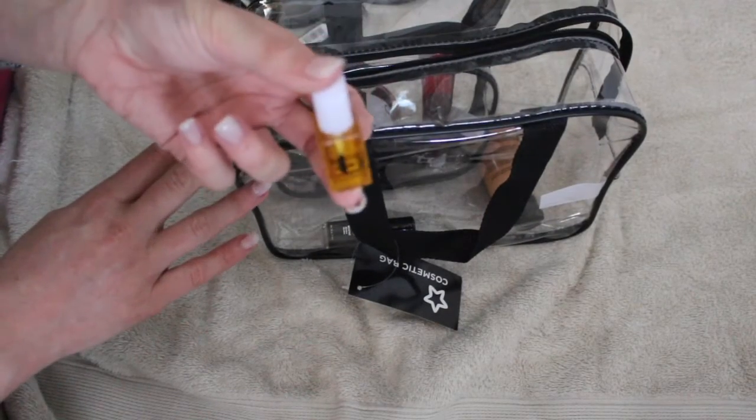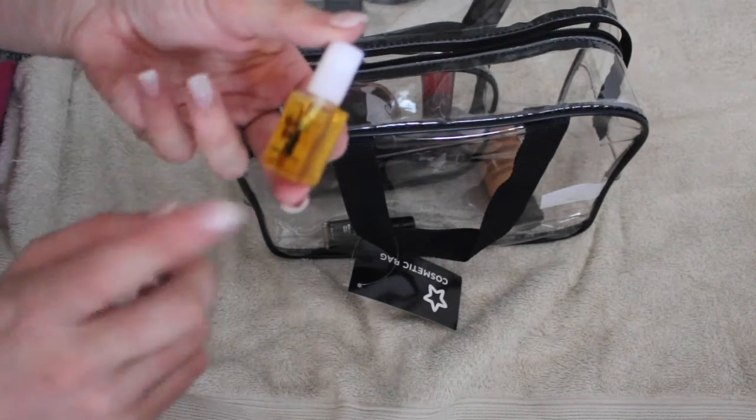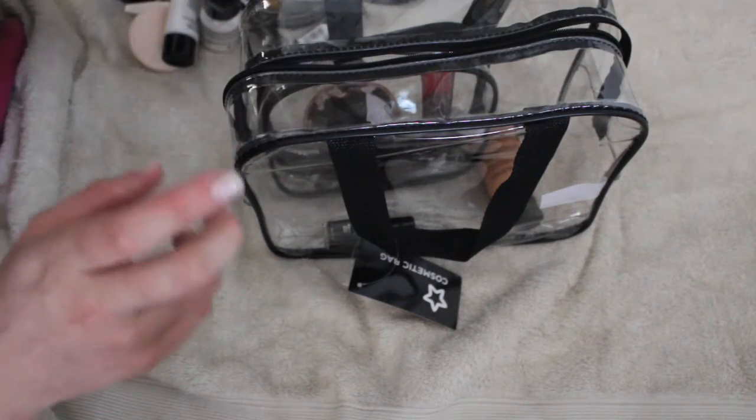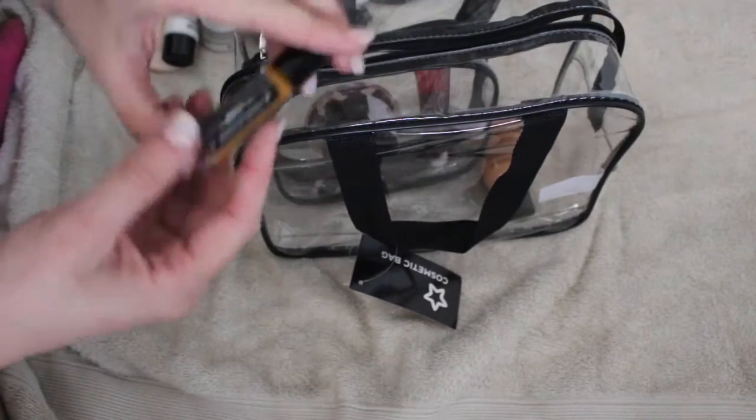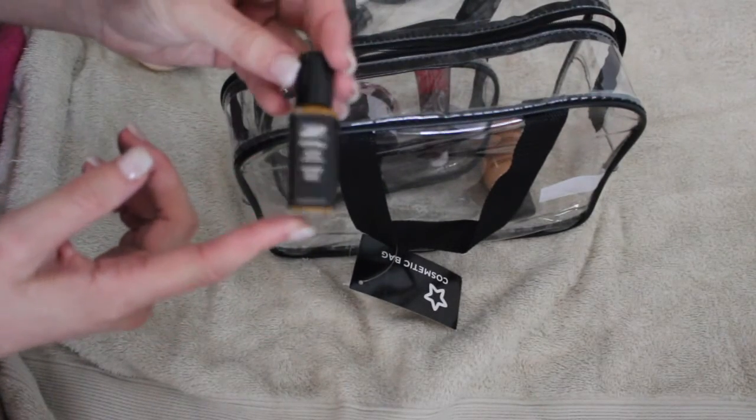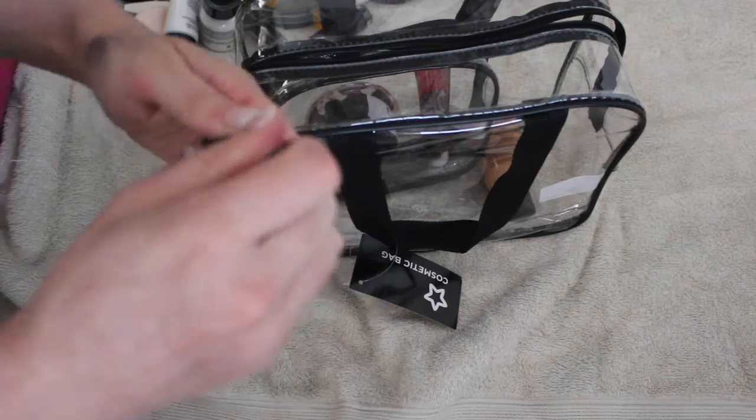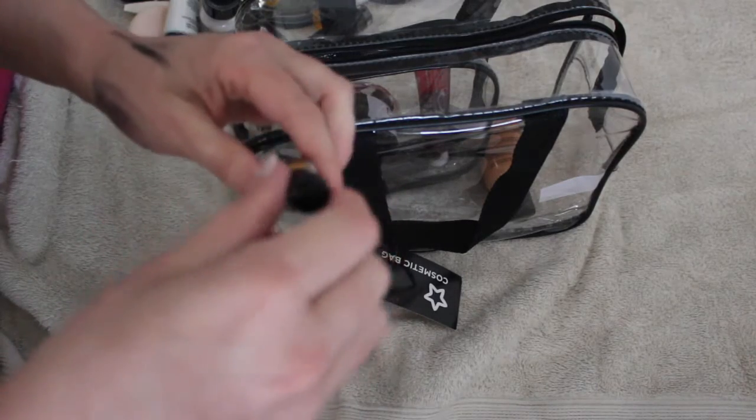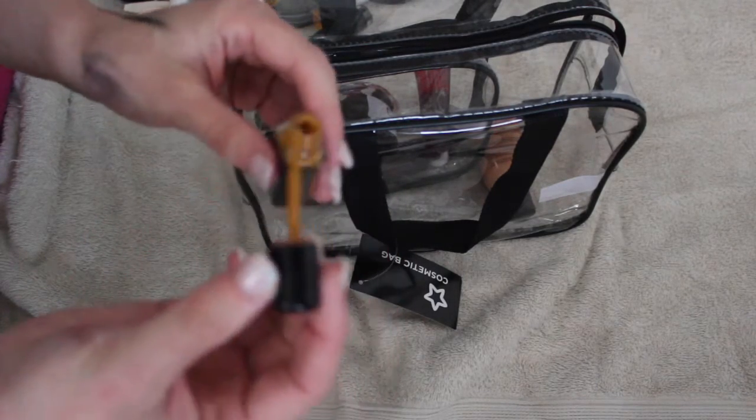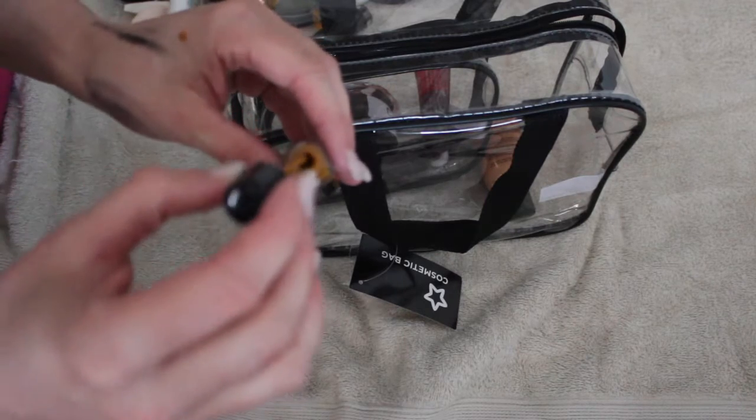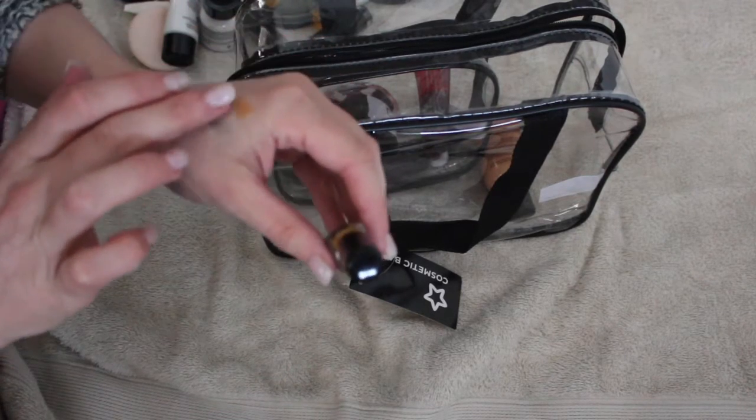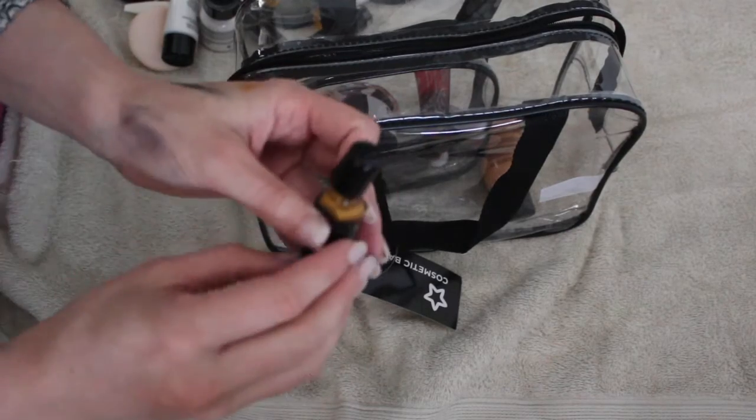Then I have spirit gum, just for sticking on scar wax. Again, this is from the Mehron kit. Then I have teeth effects from Mehron. This is nicotine effect. It's basically a stain for the teeth. It's really cool, but it stains your teeth like a yellow color. It's absolutely disgusting, but it's great for zombies and stuff like that.